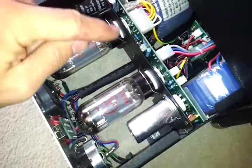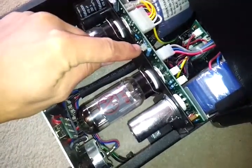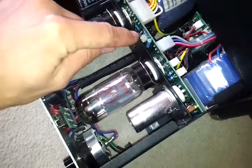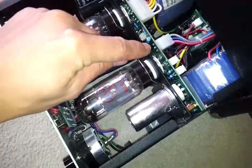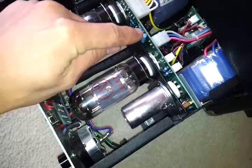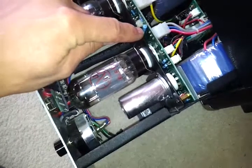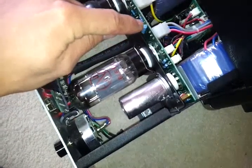Right. Here is a trim pot. And the idea is you rotate it to set the voltage across this resistor, which is the larger of the two, this one here. For information's sake, it's R18, and it's a 10 ohm resistor.